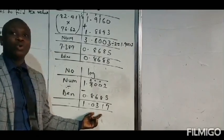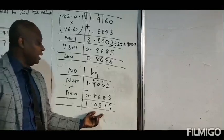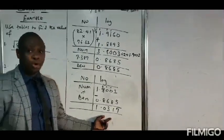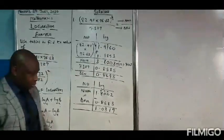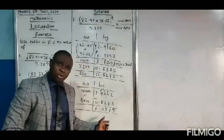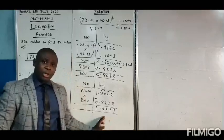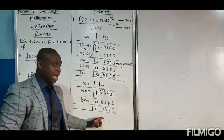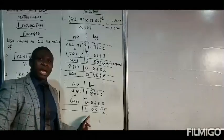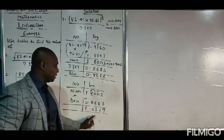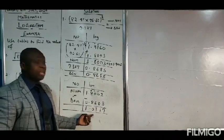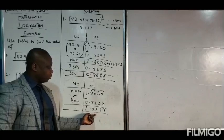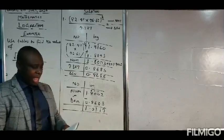At this point we use the anti-log table to obtain our anti-logarithm. Recall that whenever you want to obtain the anti-log, you make use of the mantissa. Remember: for every logarithm of a number you have the characteristics and you have the mantissa. We are going to use the mantissa, and the mantissa here is the decimal part — 0.0317.